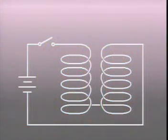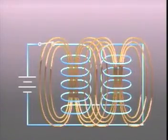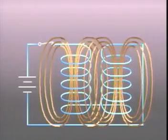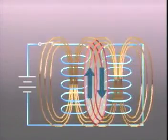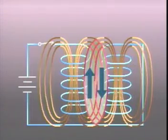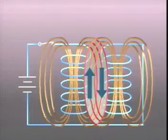If windings are wound in opposite directions, however, the flux lines are in opposite directions. The mutual inductance still has an effect, except now it interferes with the inductance of each inductor, and the total inductance is actually reduced.